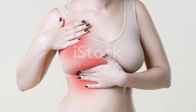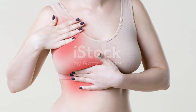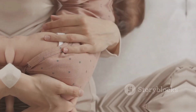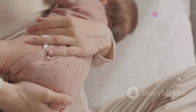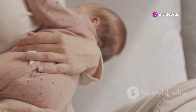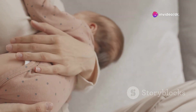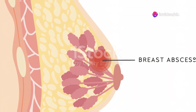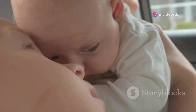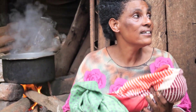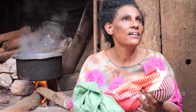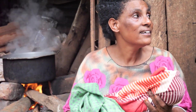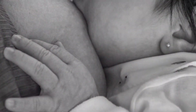For all you breastfeeding moms out there, mastitis is something you definitely want to be aware of. It's basically an infection in the breast tissue and it can come on suddenly. Your breast will be sore, red, and warm to the touch, and you might even run a fever. It's usually caused by a blocked milk duct or bacteria getting in through a cracked nipple.